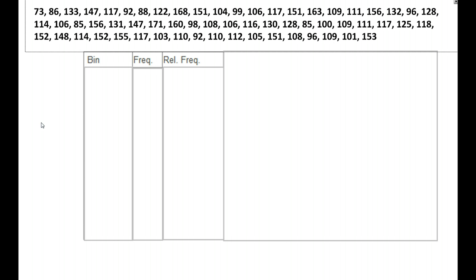Well, what happens if you get a distribution that looks like this? These numbers span from about 73 to 153, and maybe there are even higher ones in there. There are a lot of numbers going on, so you can't just create a frequency chart from that. And it looks like there are so many numbers that a stem plot is starting to look like not such a great idea either. So when we have situations like this, this is where we would create a histogram.